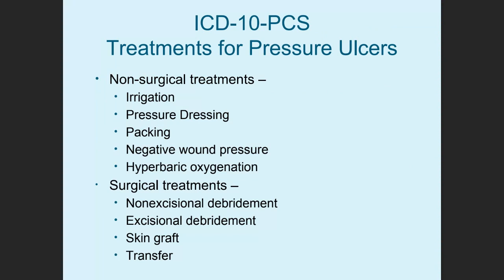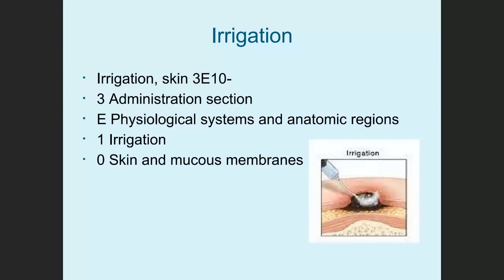Now let's look at ICD-10 PCS codes for treatment of pressure ulcers. I'll discuss non-surgical treatments and surgical treatments. If you need to review PCS coding, I have videos on each character on this channel. Non-surgical treatments include irrigation, pressure dressing, packing, negative wound pressure, and hyperbaric oxygenation. Surgical treatments include non-excisional debridement, excisional debridement, skin graft, and transfer. There may be other treatments, but these are the most common.